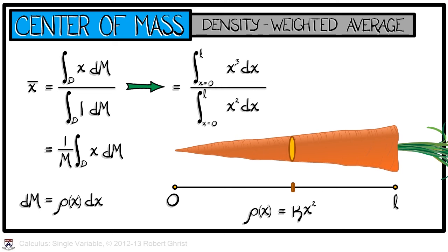And we obtain one-fourth x to the fourth from 0 to l divided by one-third x cubed from 0 to l. Substituting that in, we obtain a center of mass of three-quarters l. Notice how that's different than the centroid, which would be at l over 2.